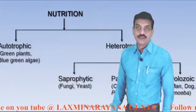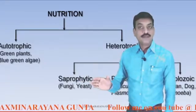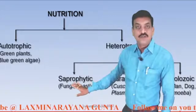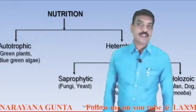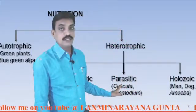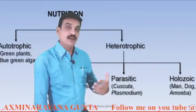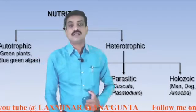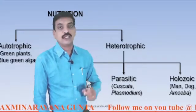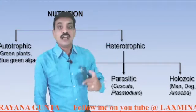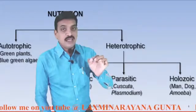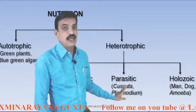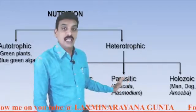Saprophytic nutrition is a mode of nutrition where organisms depend upon dead and decaying matter for their nourishment. Examples include fungi and yeast. Parasitic nutrition is a mode of nutrition where one organism obtains energy at the expense of another organism. These parasites live in or on other organisms for their food. For example, headlouse is an ectoparasite that depends upon our blood. The headlouse is the parasite and humans are the hosts. Here one is benefited — the parasite is benefited — while the host is harmed. It is a plus-minus relation.